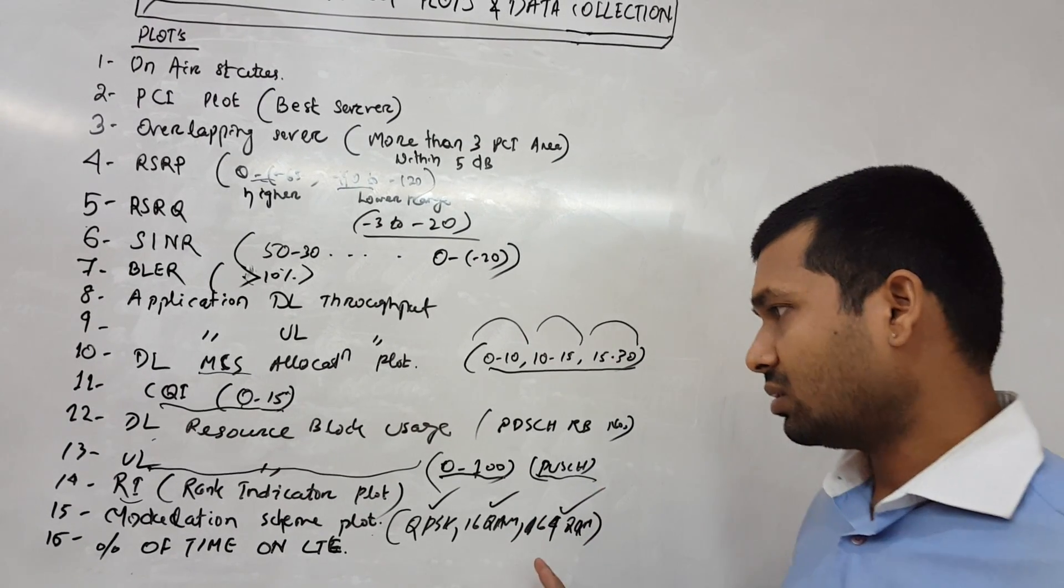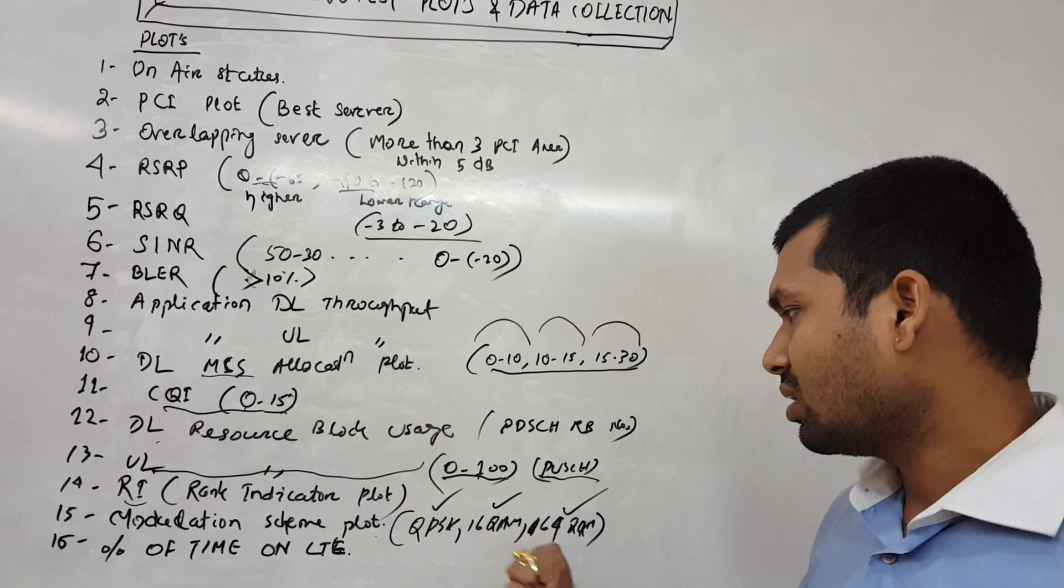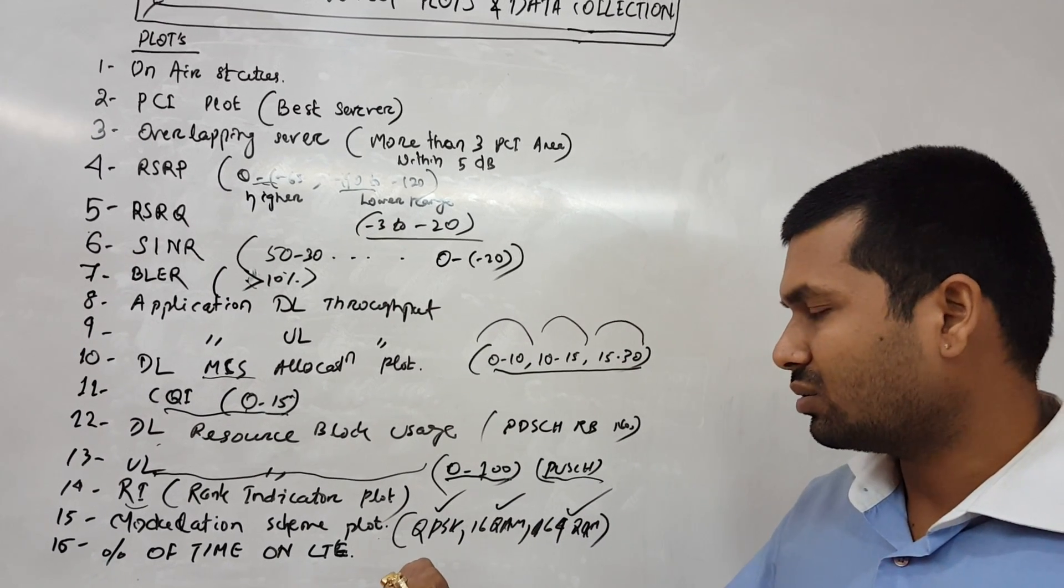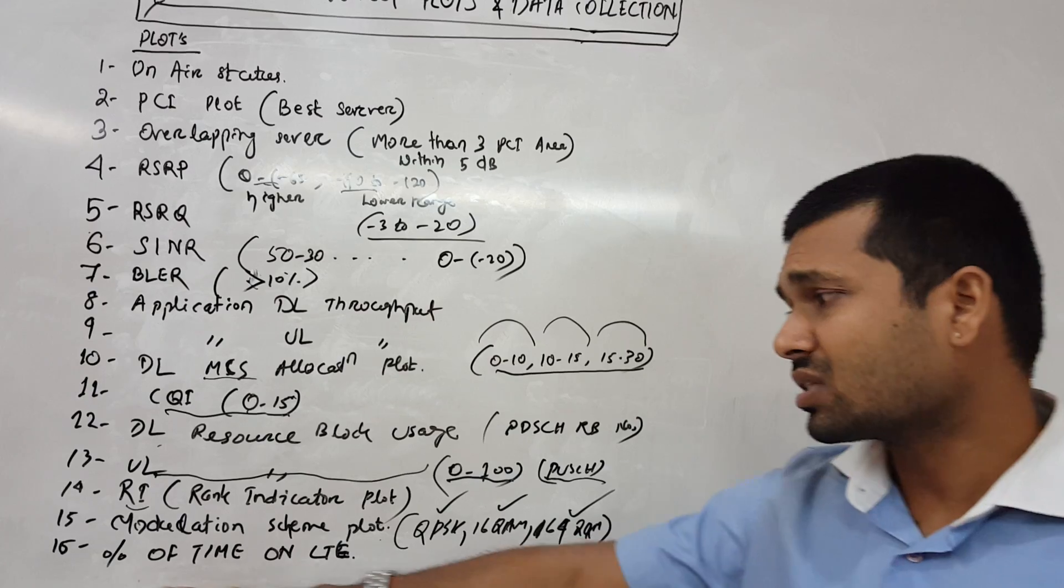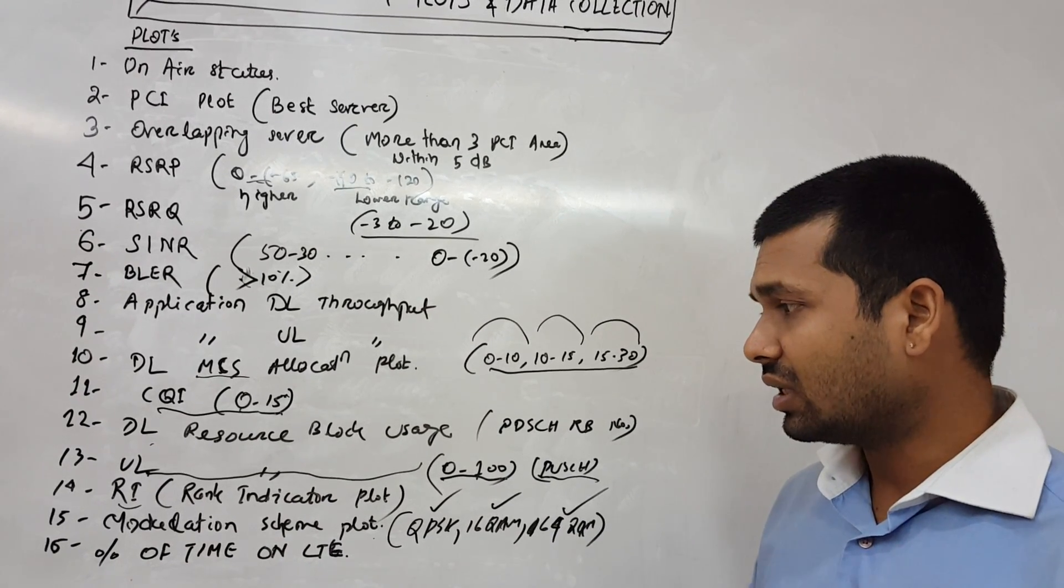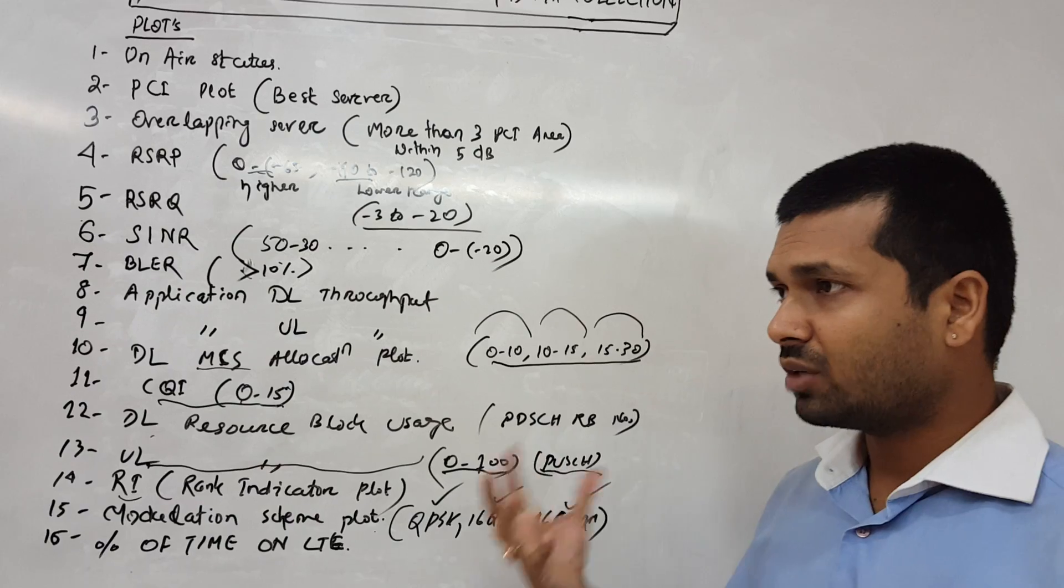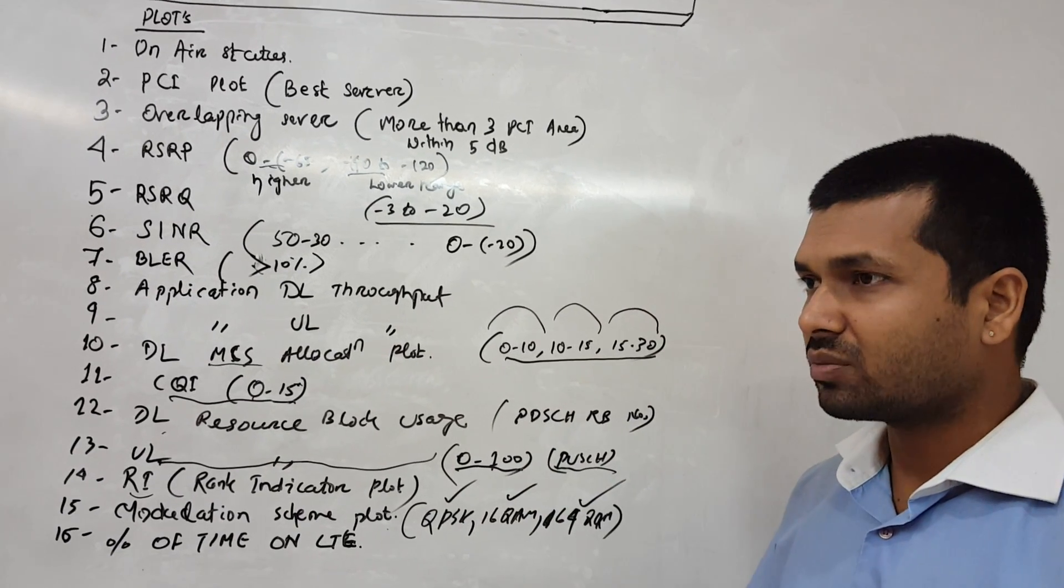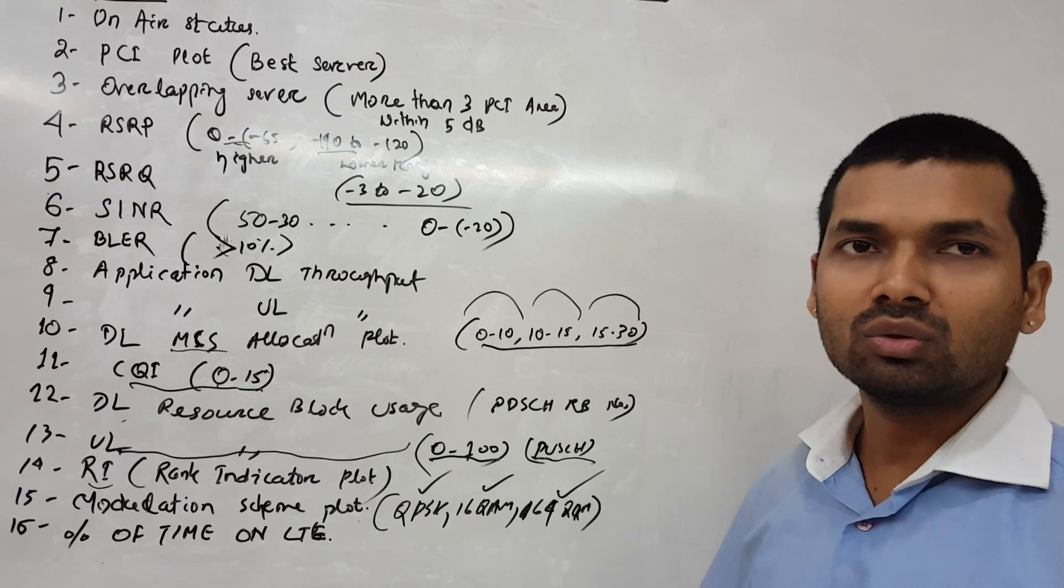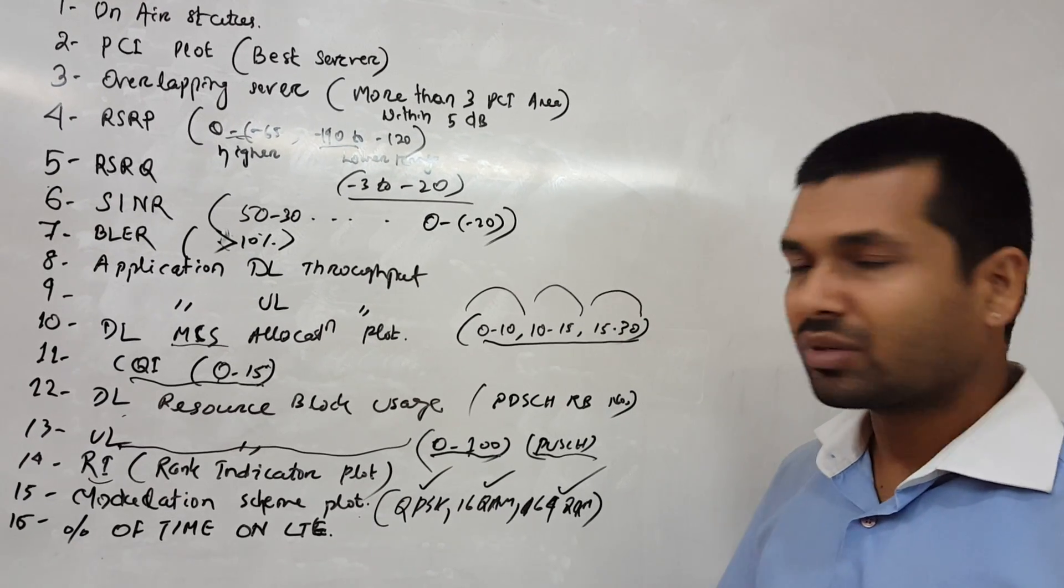Then the percentage of time on LTE - how long time we are in LTE. Out of 100% samples, we should be most of the time on LTE, otherwise we'll be moving to other contemporary networks like 3G or 2G. So most of the time we should be latched on to LTE.